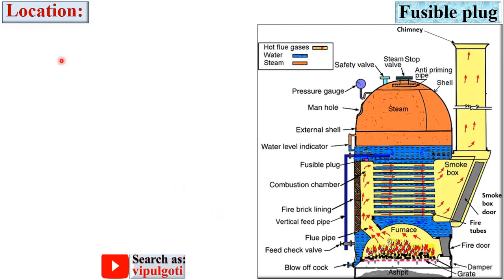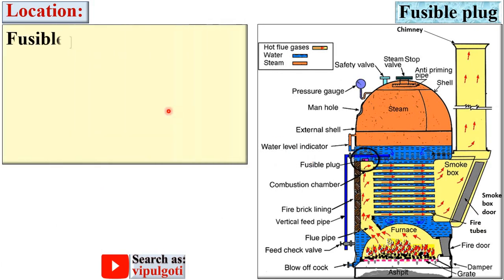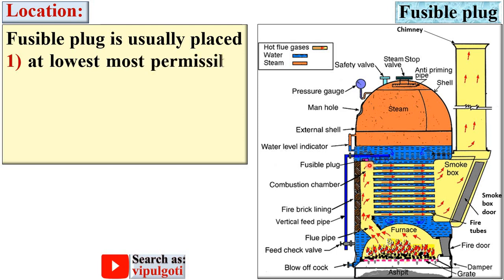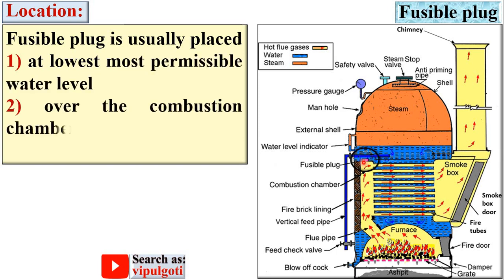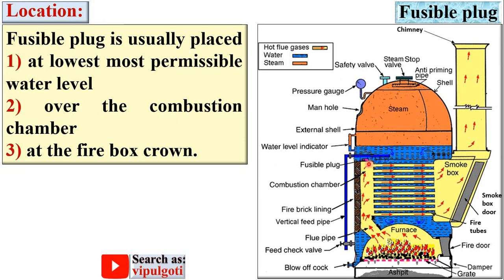Next, location. The fusible plug is usually placed at the lowest most permissible water level, over the combustion chamber — here you can see this is the combustion chamber — at the firebox crown.